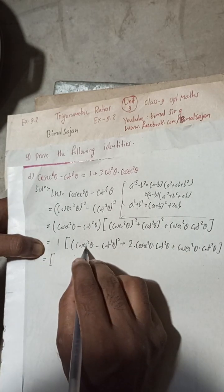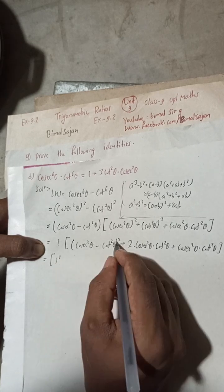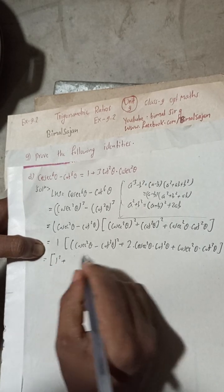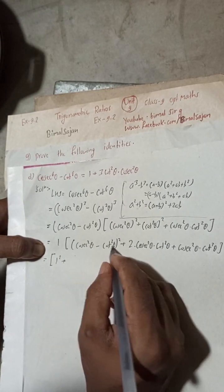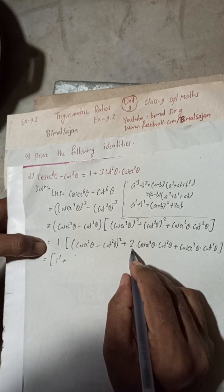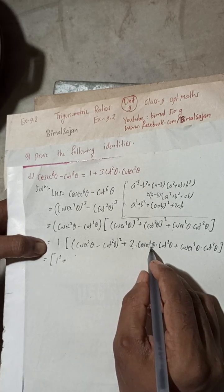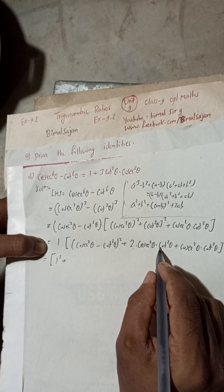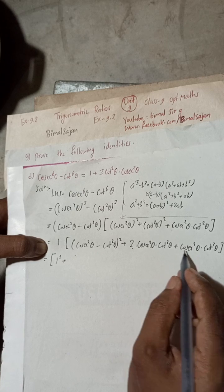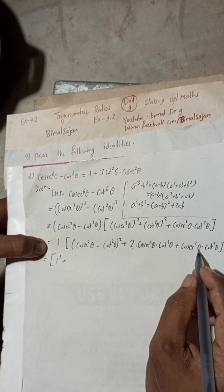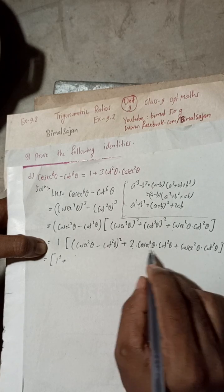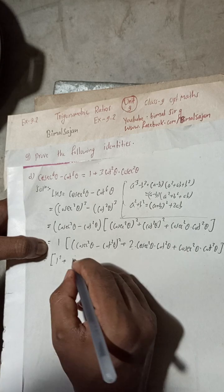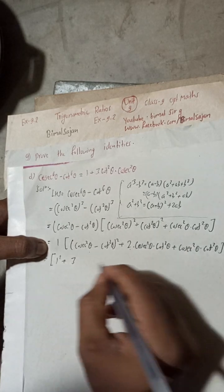This (cosec²θ minus cot²θ)² equals 1² which is 1. So we have 1 plus 2cosec²θ·cot²θ, and then plus 1 times cosec²θ·cot²θ. Both terms are the same type, so this gives 1 plus 3cosec²θ·cot²θ.